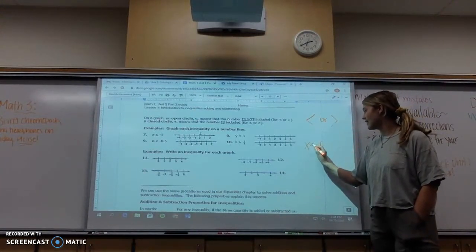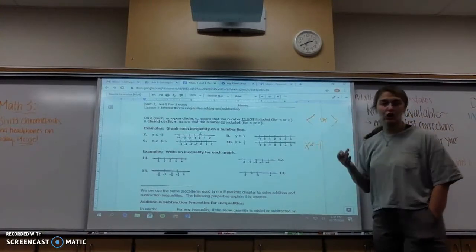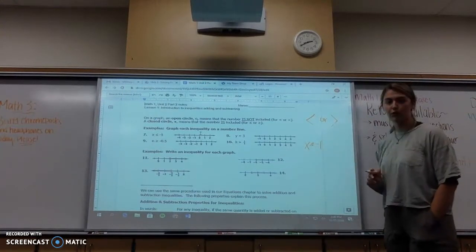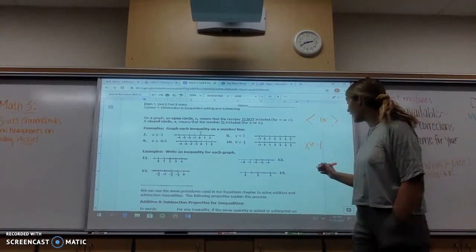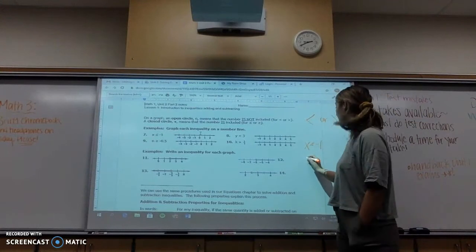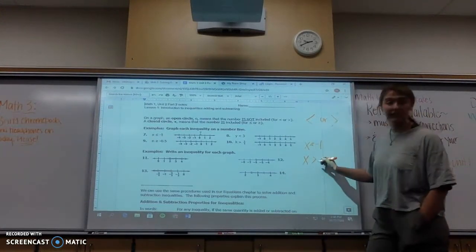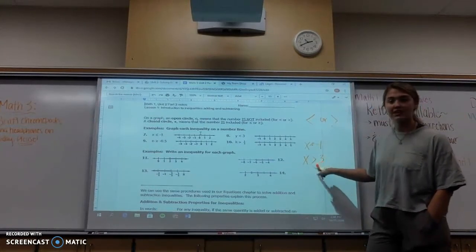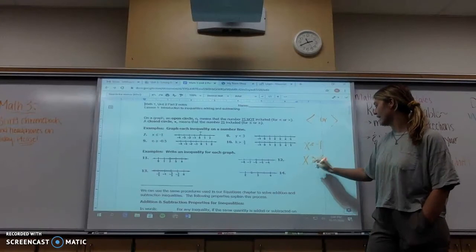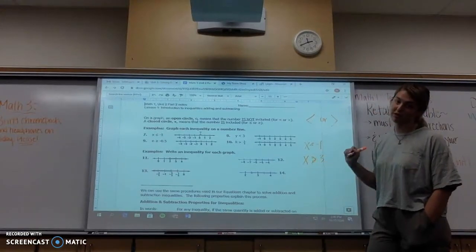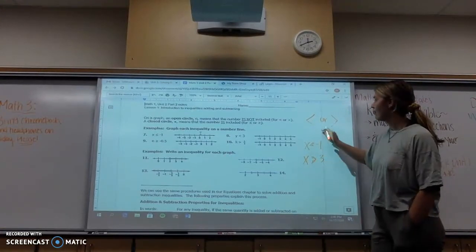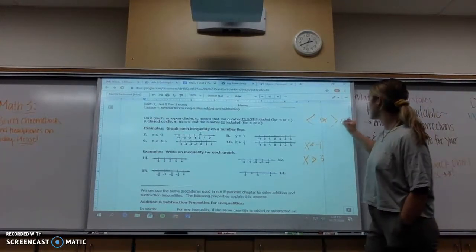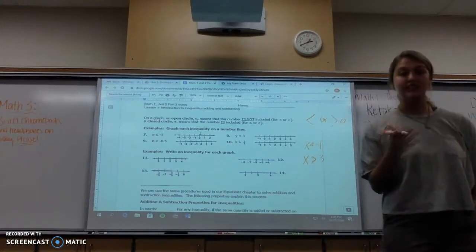So this reads left to right, x is less than negative 1. Alternately, we could have x is greater than 3. When we have a less than or greater than sign, this is when we have an open circle on our graph. And you'll see that here in a little bit.